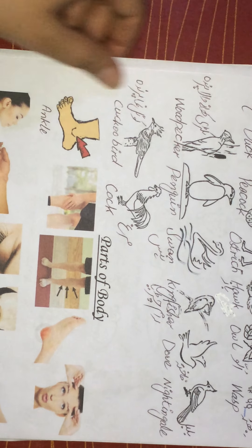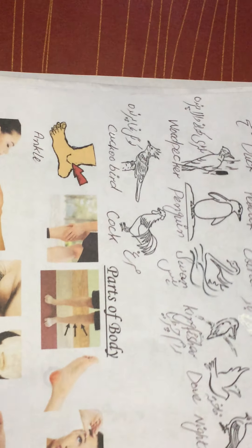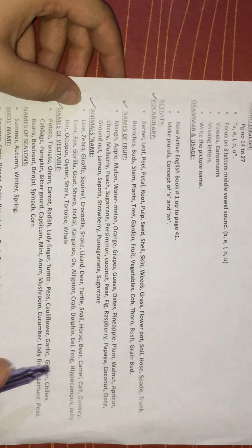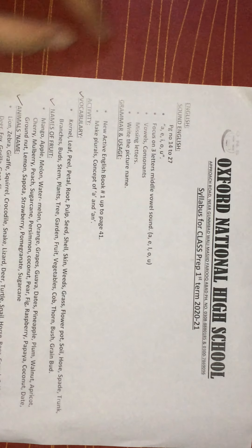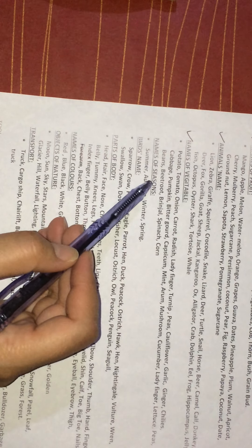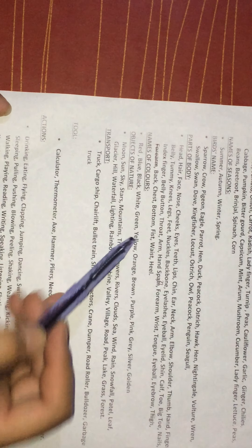In this video we have discussed parts of body, seasons name, and birds name. Here I have the syllabus of prep class. In our next video we will discuss objects of nature, transport, tools, and colors name. You can show colors to your kids and teach them the colors name. Keep watching, goodbye.